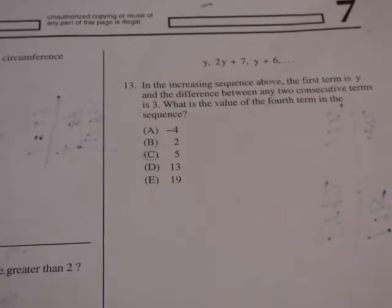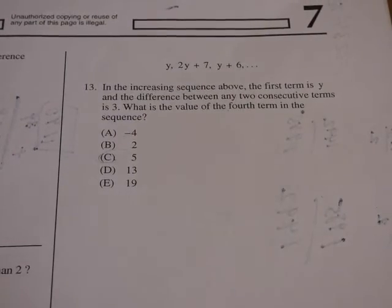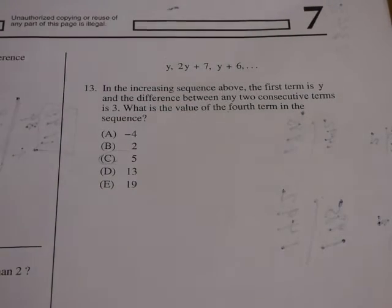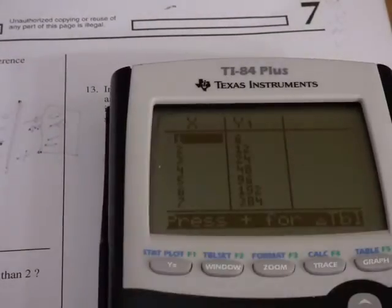Here's another problem that I wanted to show you to demonstrate how you could use this program again. This one is similar to the one we just did, except that it's an arithmetic sequence, and it actually gave you variables. So it says here, in the increasing sequence above, the first term is y, and the difference between any two consecutive terms is three. What is the value of the fourth term in the sequence? The terms that they give you are the first one is y, the second one is 2y plus 7, the third one is y plus 6.